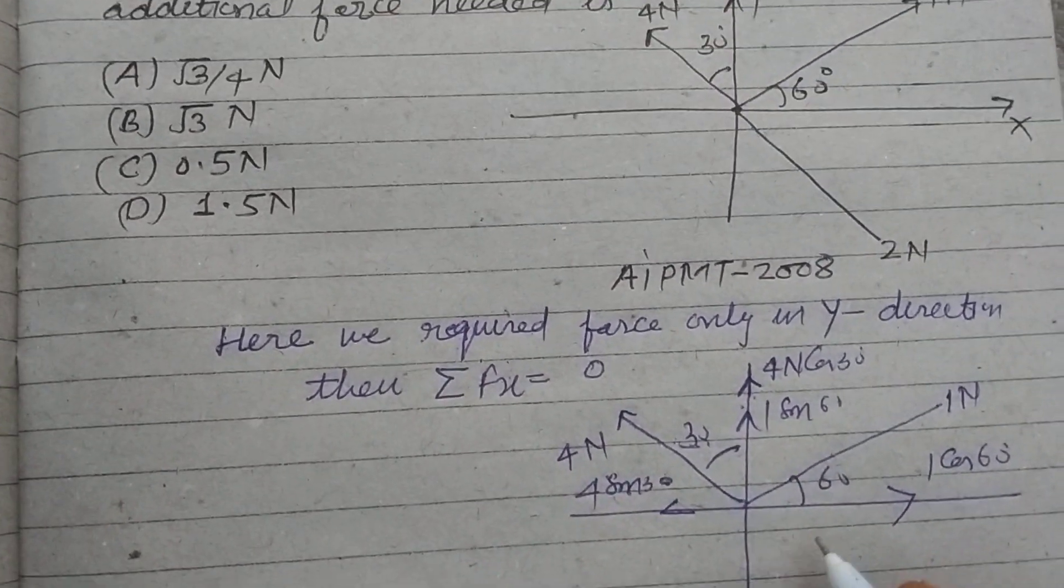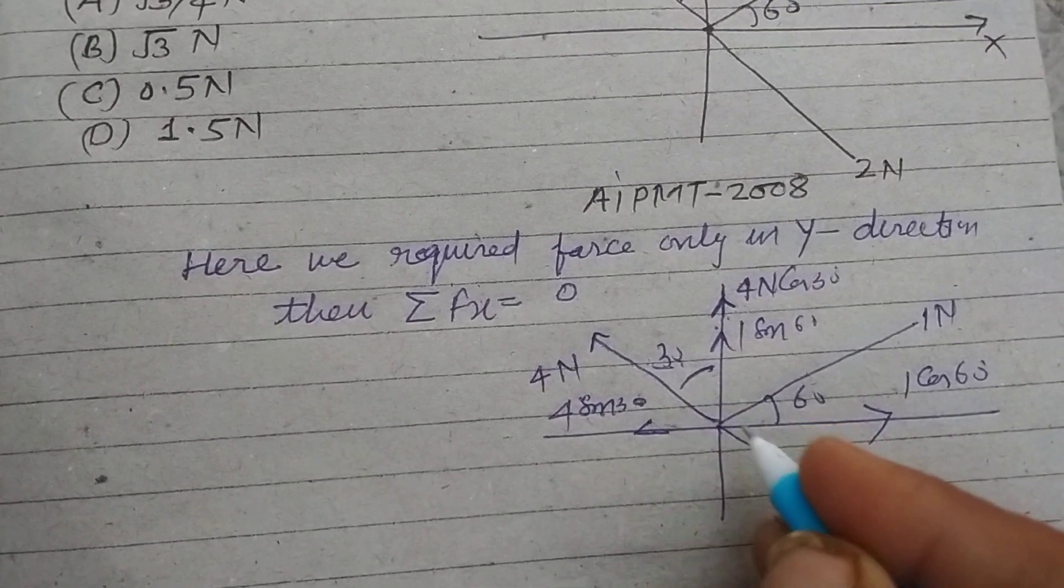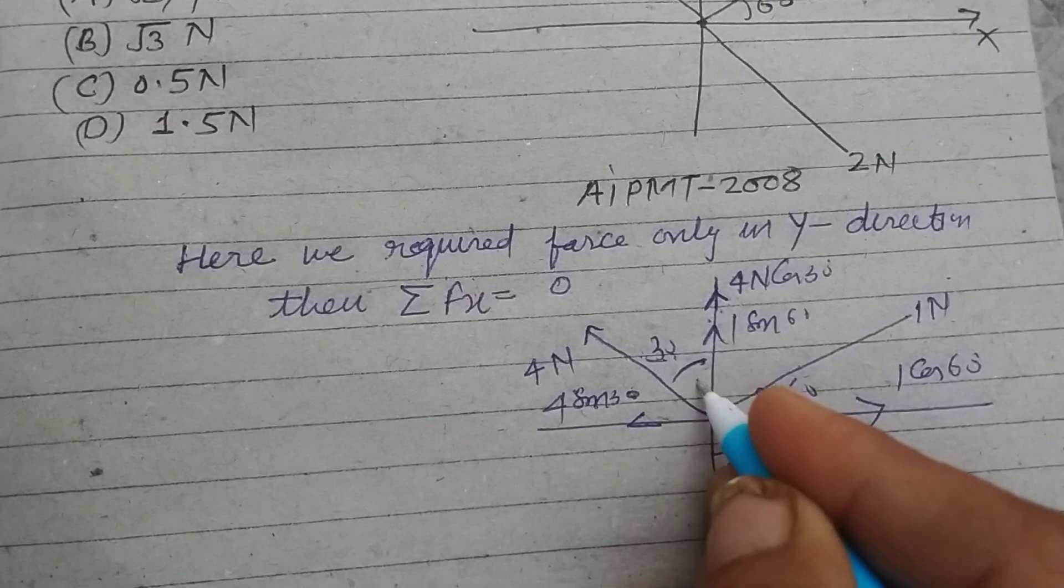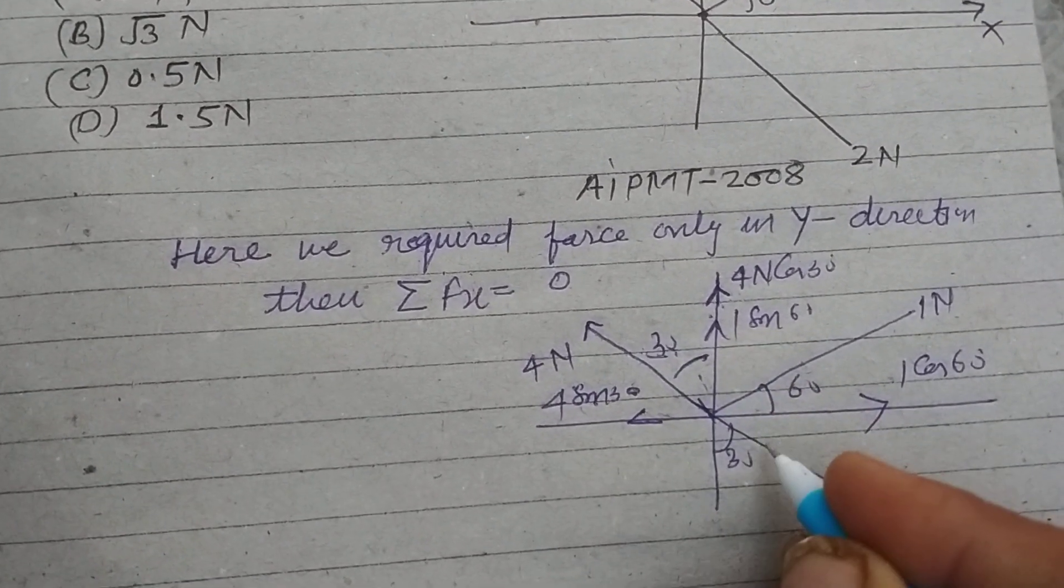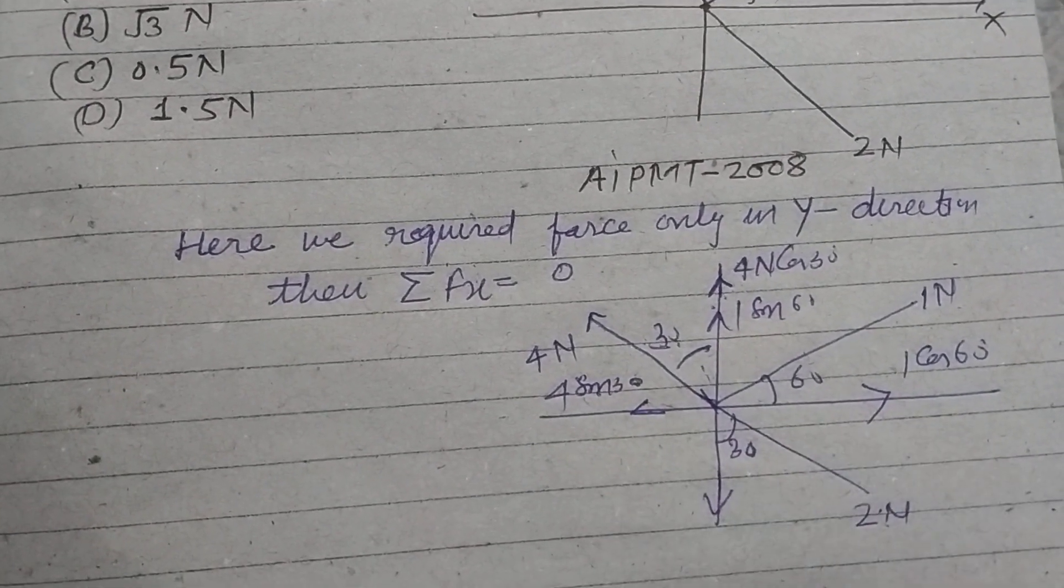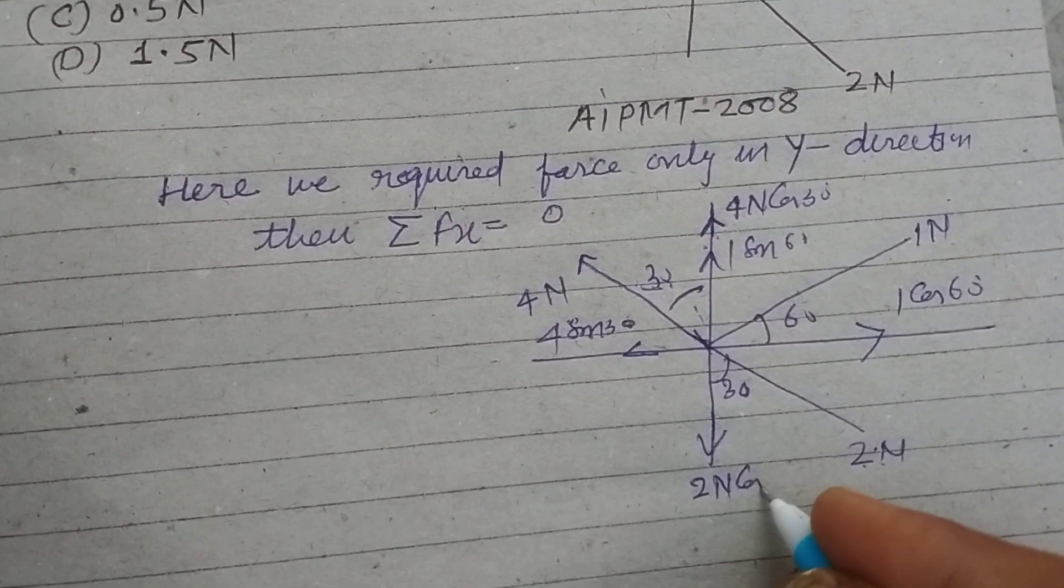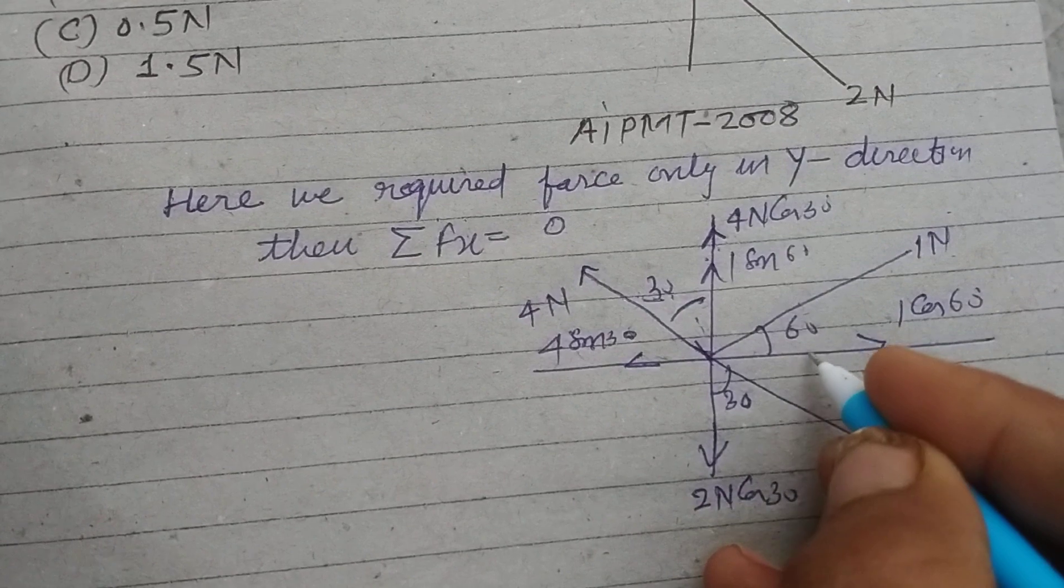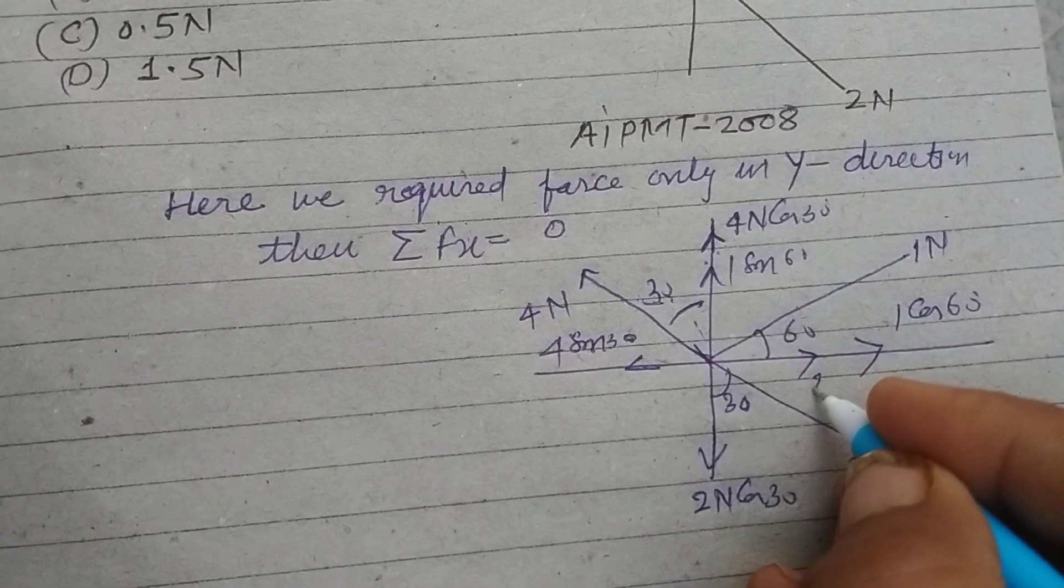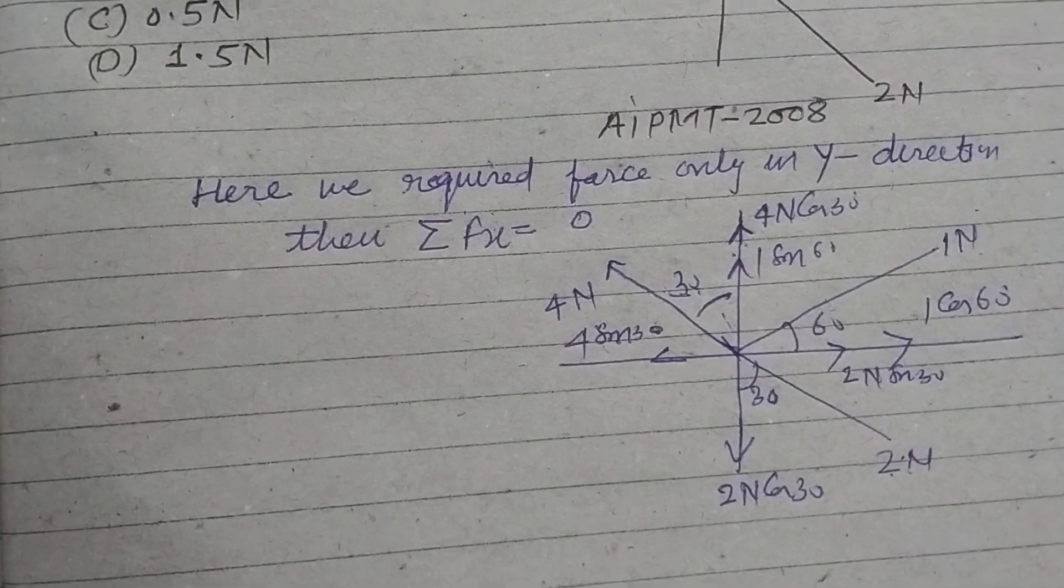And another third force is 2 newton which is 30 because these are vertically opposite angles, and therefore its component in Y direction is 2 cos 30 and this is 2 sin 30.